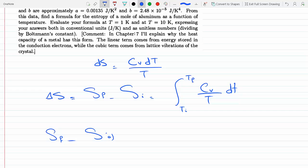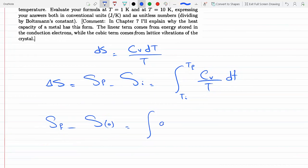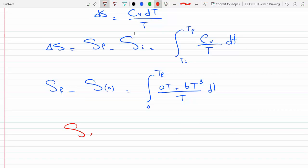I would get a change in S which is S final minus S at 0 equals the integral of CV which is aT plus bT cubed over the temperature dT. This is going from 0 to T final.